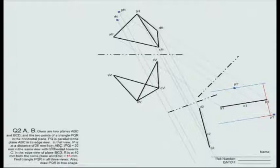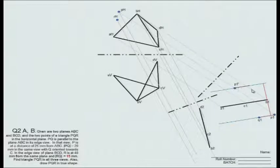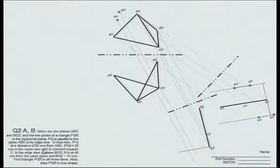The second statement says the distance PQ is 20 millimeters in the same view, and Q is oriented towards C. If I choose P1, I will have to move towards C at a distance of 20 millimeters and mark point Q — this is Q1. I can either go this way or that way, but going towards C makes more sense. So I can choose this as my point Q1 prime, or I can go in the slightly contradictory direction. Before that, let me start working with the edge view of BCD to locate point R.